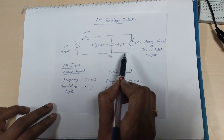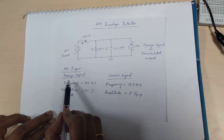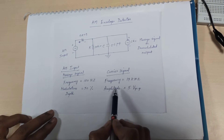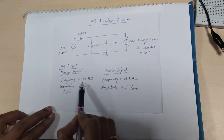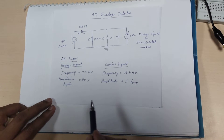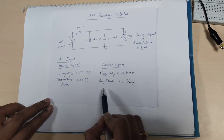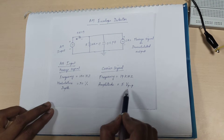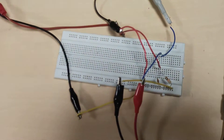Now let us look at the settings for AM generation. The message signal is a low frequency signal set at 100 Hz, and the modulation depth is chosen as 50%. The carrier signal is a high frequency signal at 19 kilohertz with an amplitude of around 5 volts peak-to-peak. These are the settings used for AM signal generation.